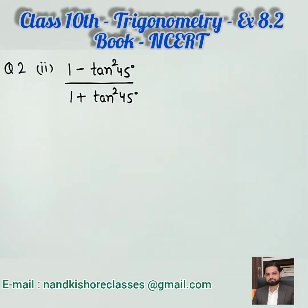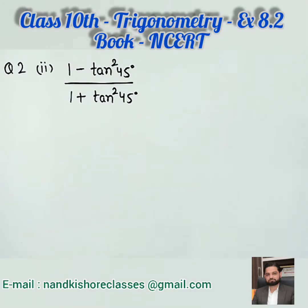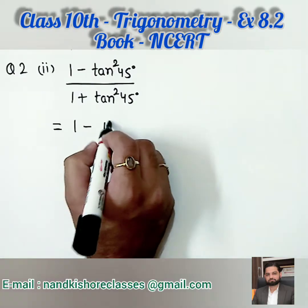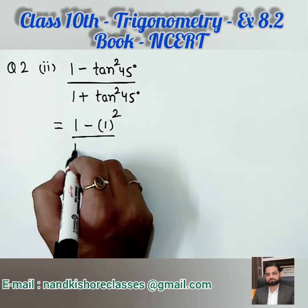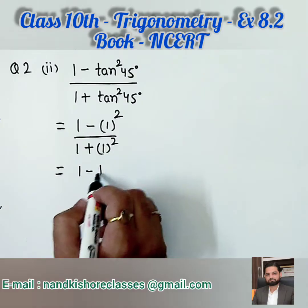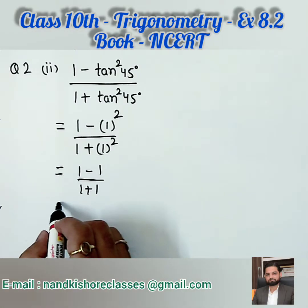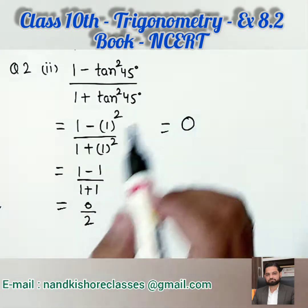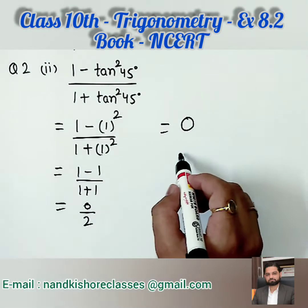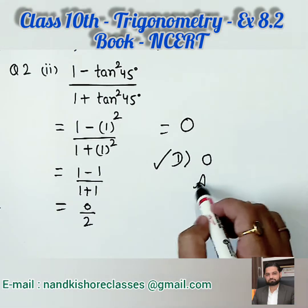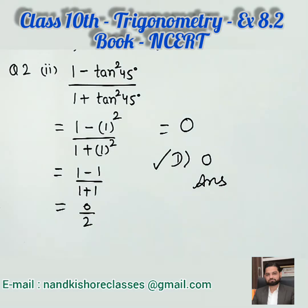Look at the next part: 1 minus tangent square 45 degrees over 1 plus tangent square 45 degrees. This is a very easy question because the value of tangent 45 is 1. So let us put 1 in the numerator as well as in the denominator. 1 squared is 1. So 1 minus 1 is 0, and 1 plus 1 is 2. Its answer is 0. Option D in the book is 0, so that is our final answer. Let us move to the third part.